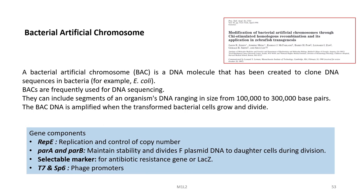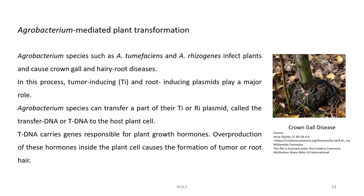We also have Bacterial Artificial Chromosomes (BACs). A BAC is a DNA molecule created to clone DNA sequences in bacteria and is frequently used for DNA sequencing. BACs can include segments of an organism's DNA ranging from 100,000 to 300,000 base pairs. The gene components in a BAC include repE, which replicates and controls copy number; parA and parB, which maintain stability and divide F plasmid DNA to daughter cells during division; selectable markers like antibiotic resistance genes; and T7 and SP6 phage promoters.